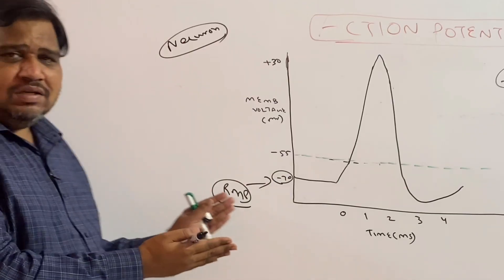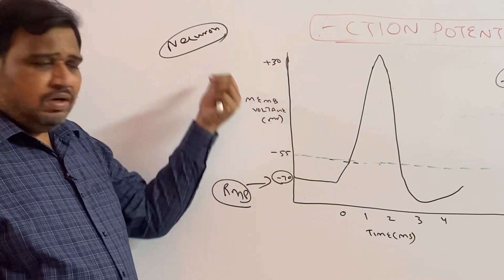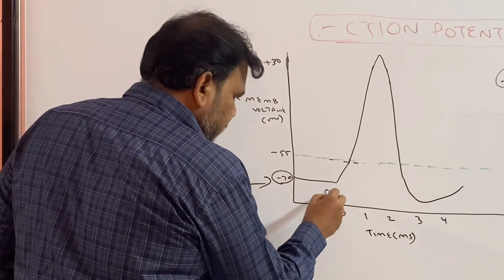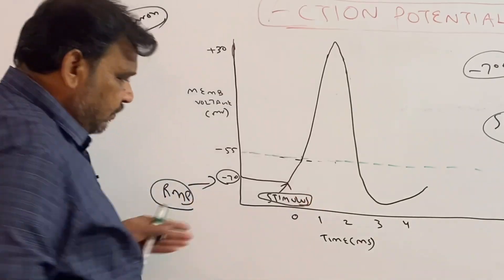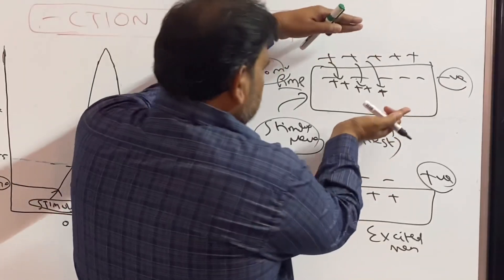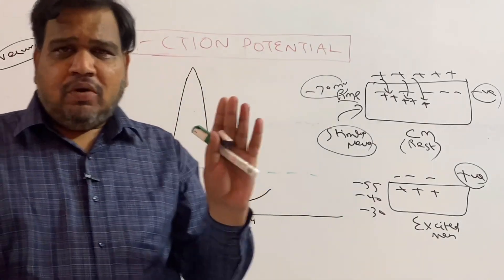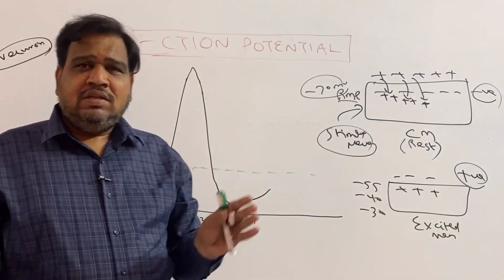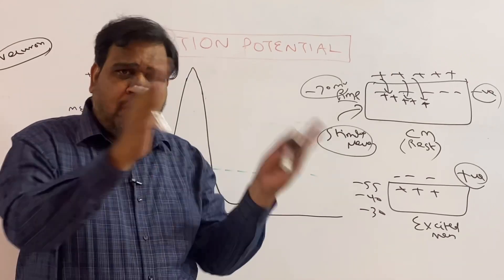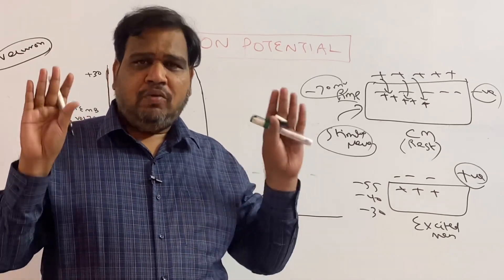Coming back to the action potential curve: the resting membrane potential of a neuron, taking the example of a neuron, is minus 70 millivolts. That means the neuron is polarized. Polarization means there is already a resting membrane potential because the inside is negative and the outside is positive, and the resting membrane potential of a neuron is minus 70 millivolts.